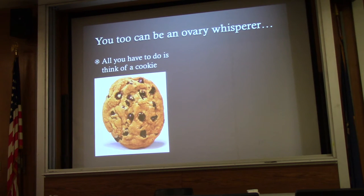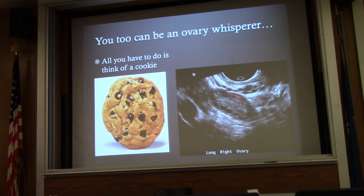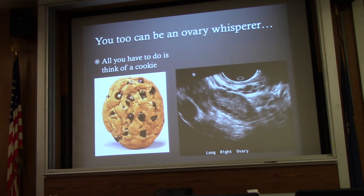You can be an ovary whisperer — all you have to do is think of a chocolate chip cookie. On this endocavitary ultrasound, you can see two structures: the ovary, which has a hyperechoic capsule, and the follicles. You also have an anechoic stripe — these are the iliac vessels. Iliac vessels are very important for localizing the ovary, because the ovary is always either medial and anterior to the iliac vessel.